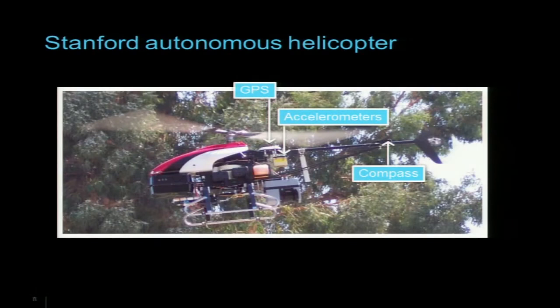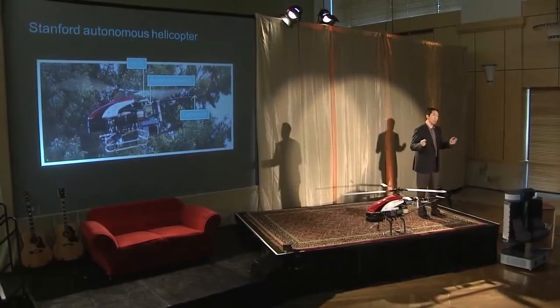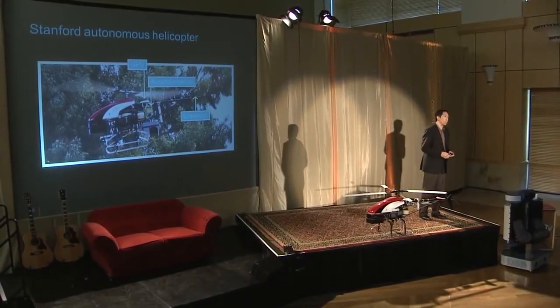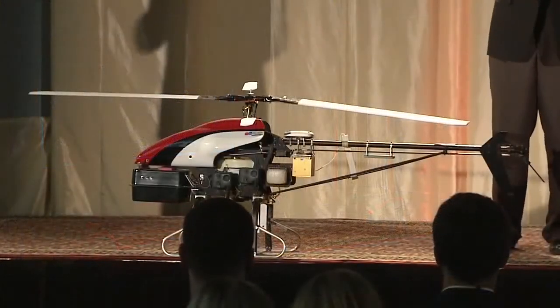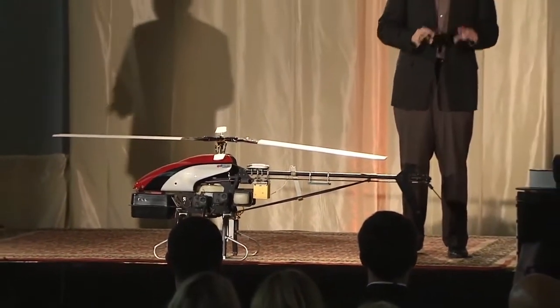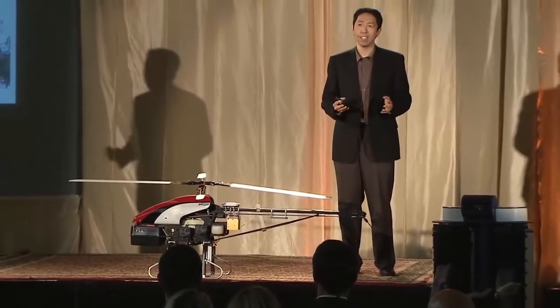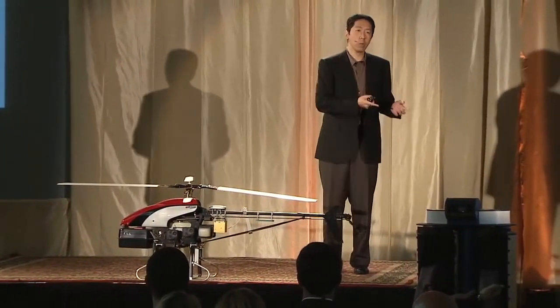For a computer, the problem is: 10 times a second you're told where the helicopter is, and you need to figure out how to move all these control sticks to keep the helicopter in the air. When I first got my hands on a helicopter, the first thing I thought was: I know math. Let's just write out a mathematical specification for how helicopters behave, and we'll program the math specification into a computer, and then the computer will know how to fly the helicopter.